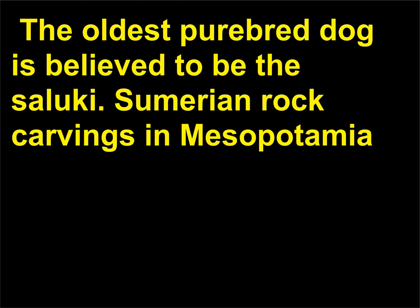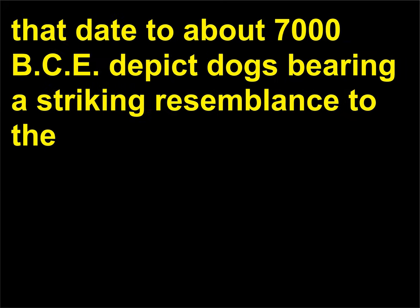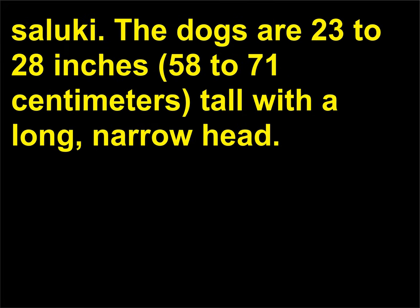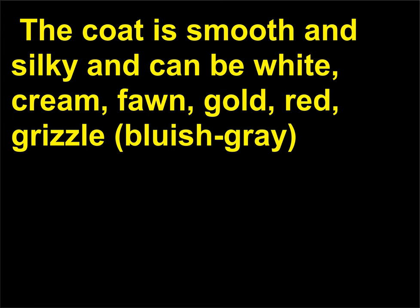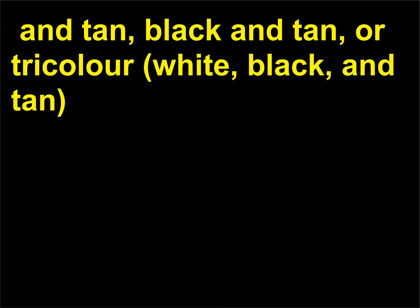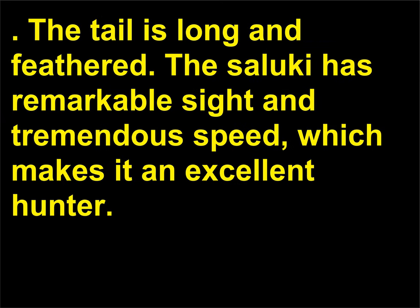The oldest purebred dog is believed to be the Saluki. Sumerian rock carvings in Mesopotamia dating to about 7,000 BCE depict dogs bearing a striking resemblance to the Saluki. The dogs are 23 to 28 inches (58 to 71 centimeters) tall with a long, narrow head. The coat is smooth and silky and can be white, cream, fawn, gold, red, grizzle, bluish-gray, black and tan, or tricolor. The tail is long and feathered. The Saluki has remarkable sight and tremendous speed, which makes it an excellent hunter.